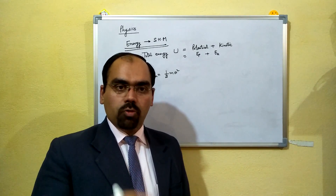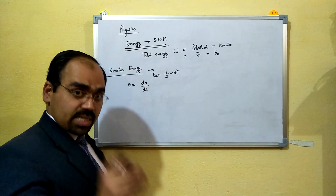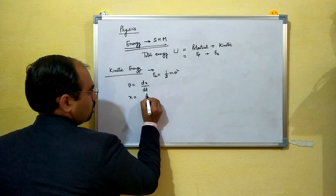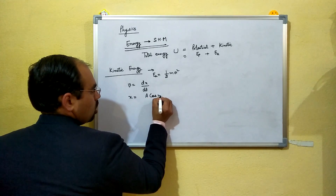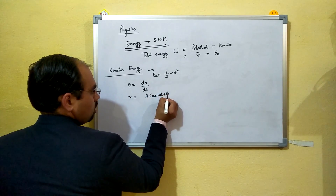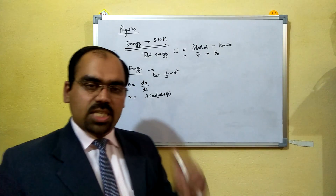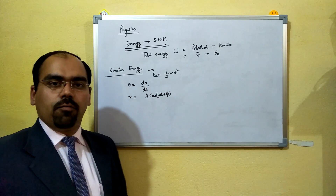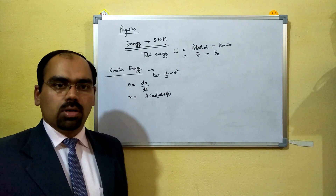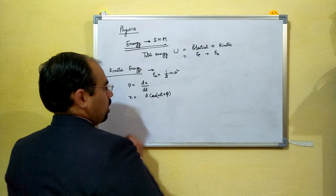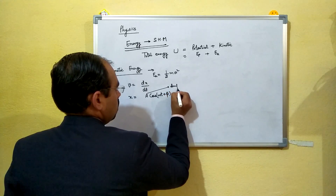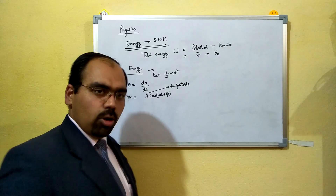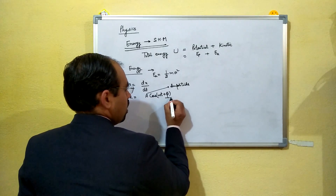For SHM, x is represented as A·cos(ωt + φ), because SHM is a harmonic motion and can easily be represented in the form of either sine or cosine. Here, A is the amplitude, ω is the angular frequency, and φ is the initial phase.